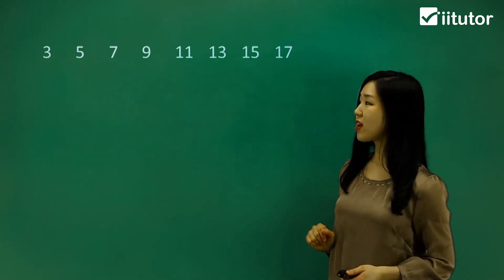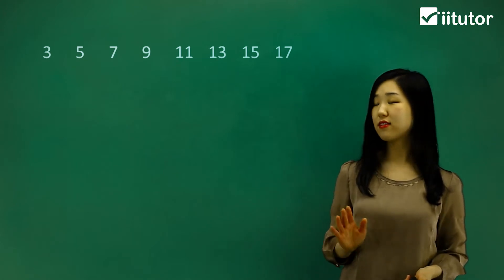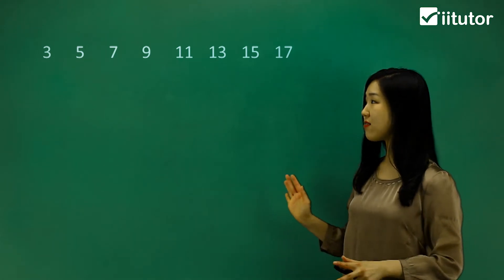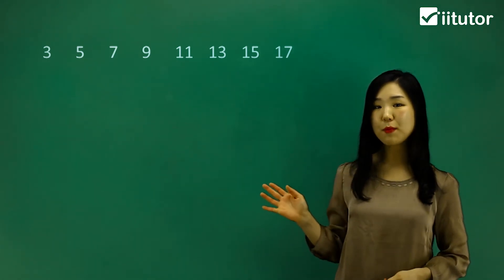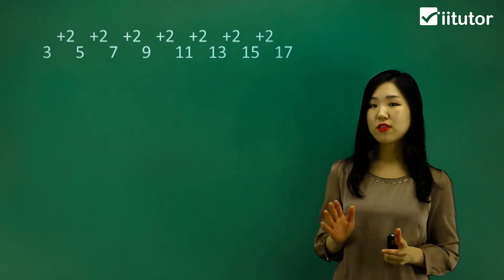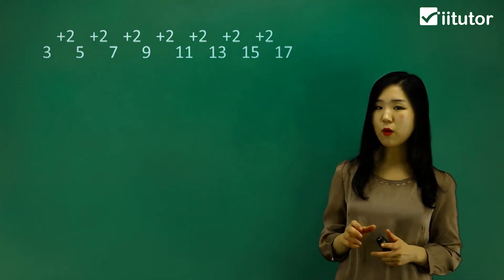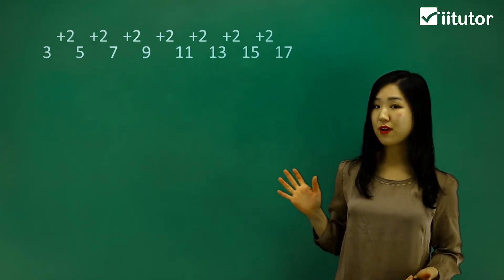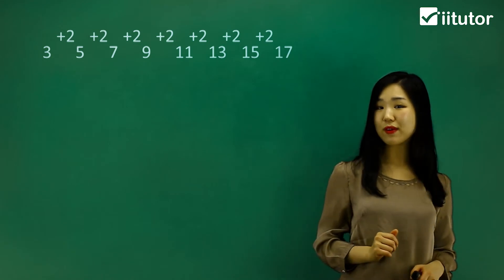Have a look at our example on the board. It's 3, 5, 7, 9, 11. It's going up by 2 in each case. The difference is all 2, therefore it is definitely an arithmetic sequence.